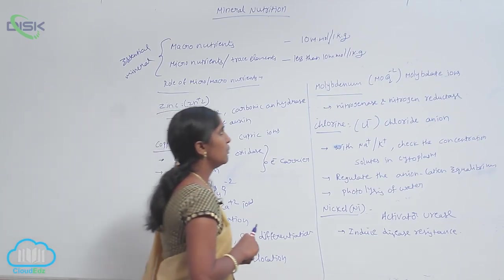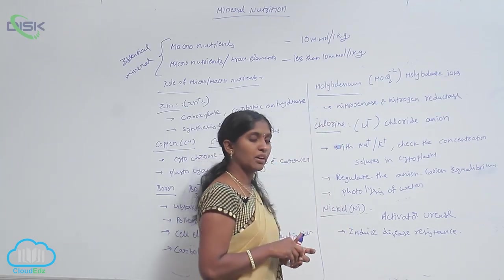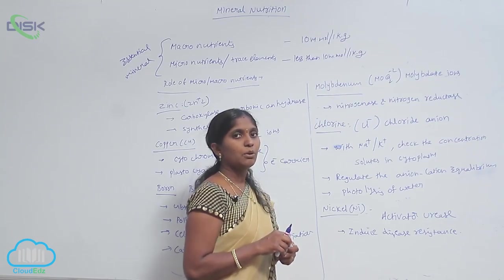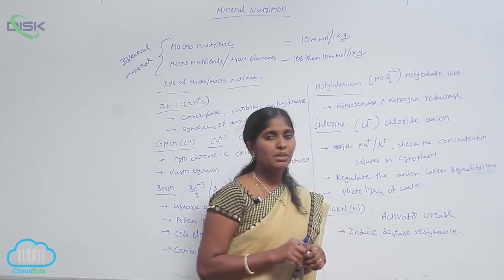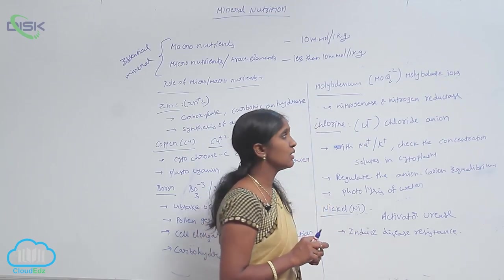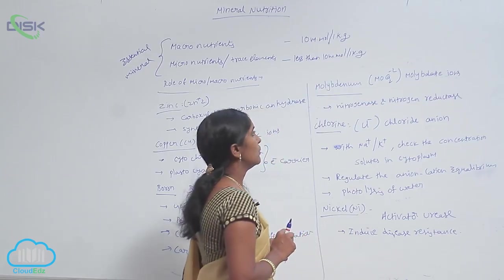Next, molybdenum. Molybdenum is also a trace element. The absorbed form is MoO4-2.